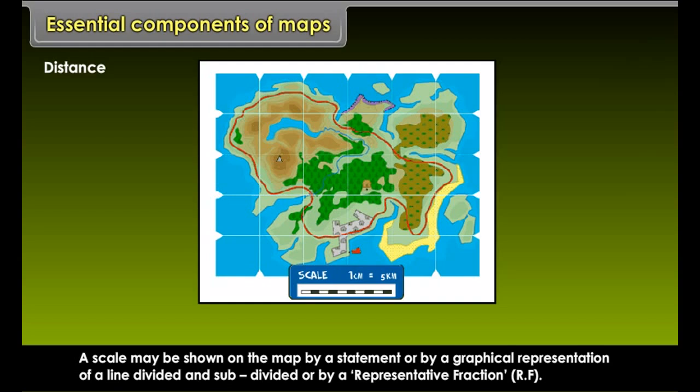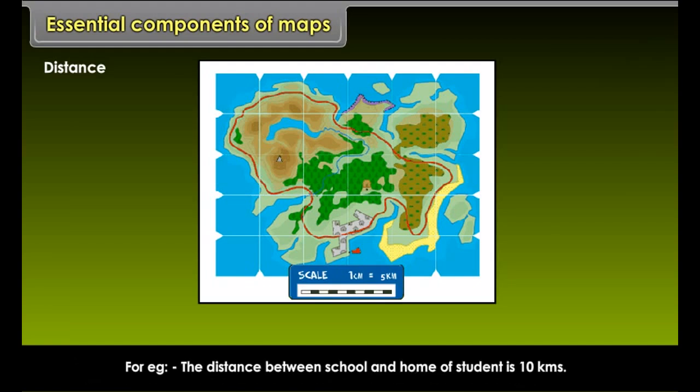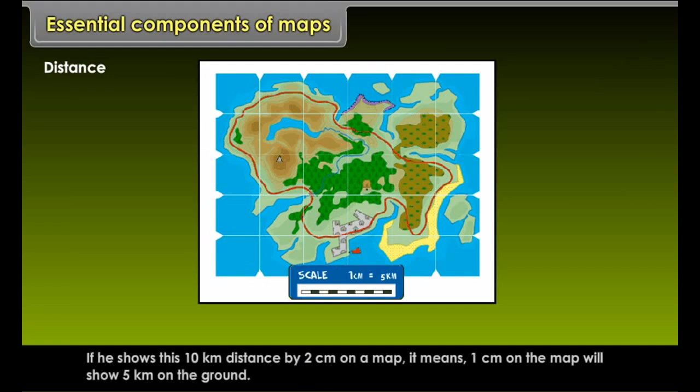Distance. Distance is measured with the help of a scale. A scale is the ratio between map distance and the ground distance. A scale may be shown on the map by a statement or by a graphical representation of a line divided and sub-divided or by a representative fraction, RF.